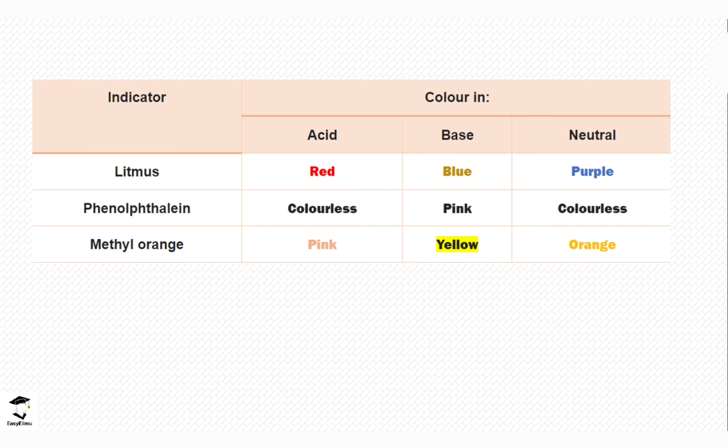If we were to use red litmus paper in an acid, it would remain red. Blue litmus paper would turn red. At the end of the day, the color on both red and blue litmus paper when placed in an acid is going to be red.